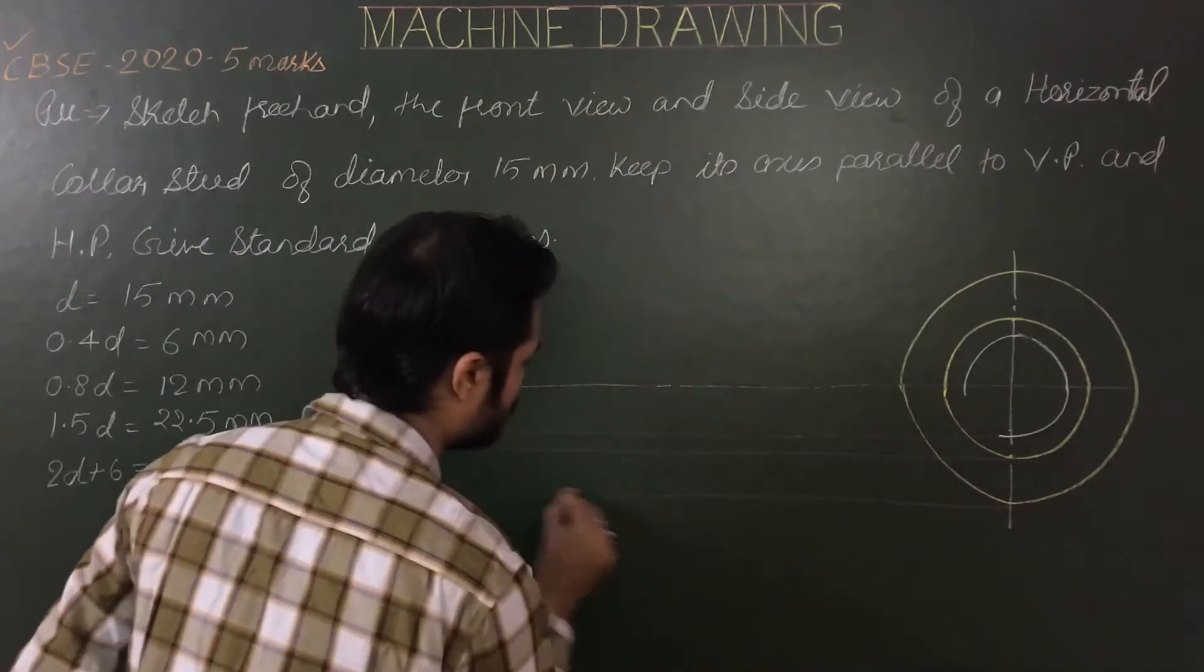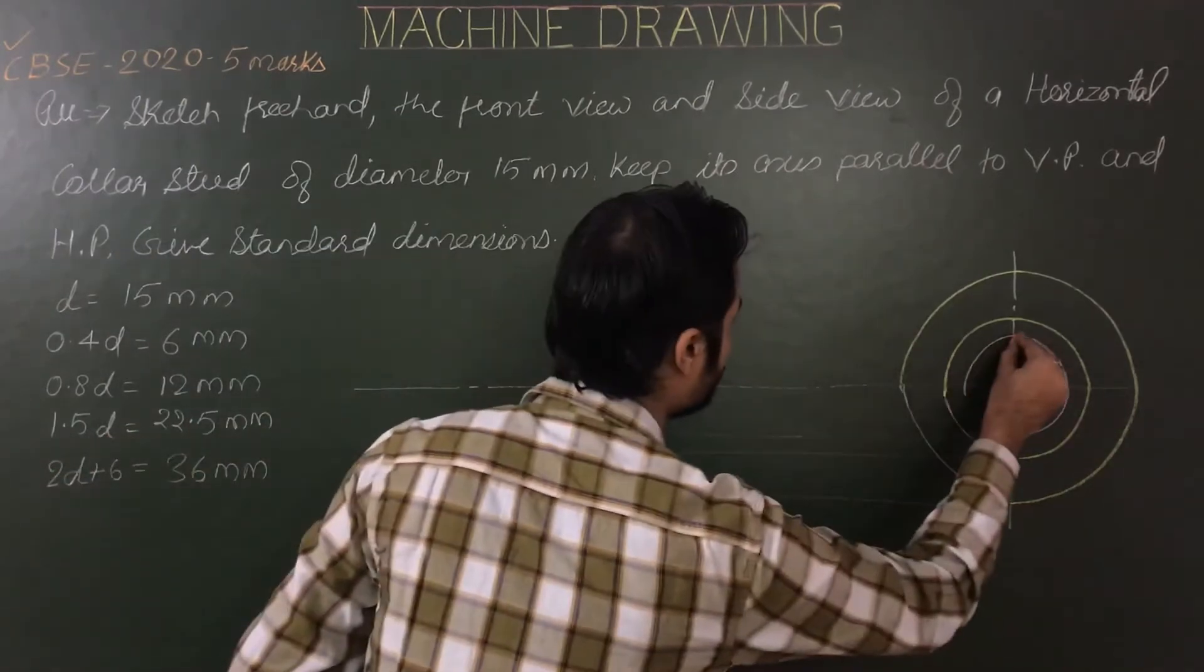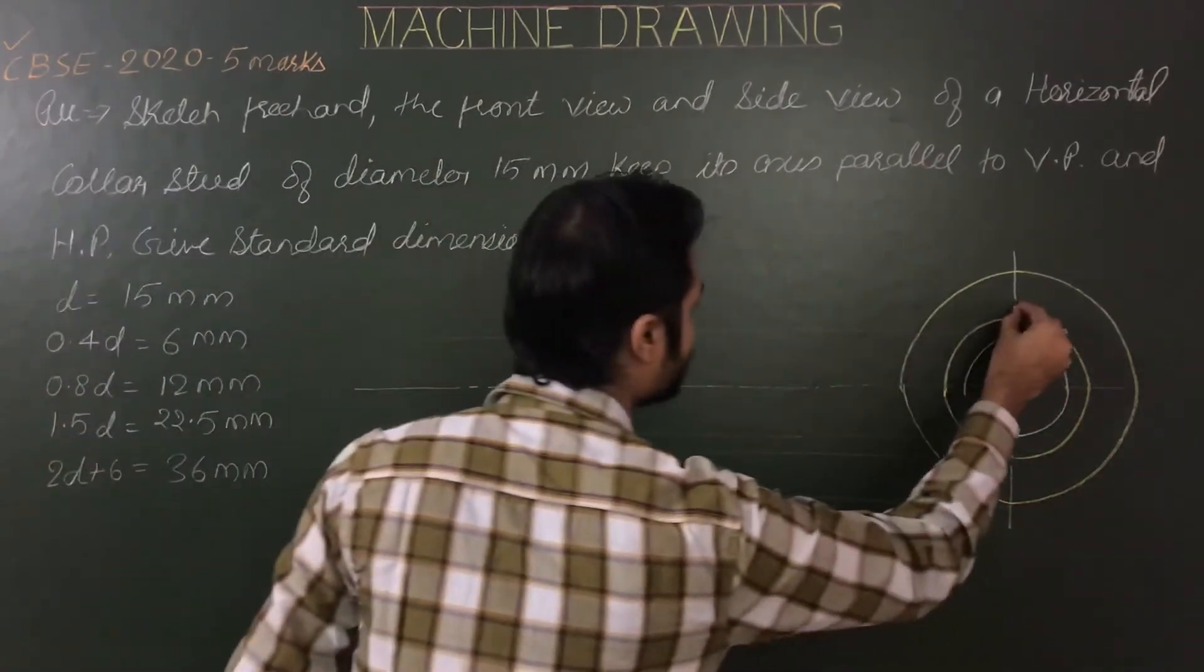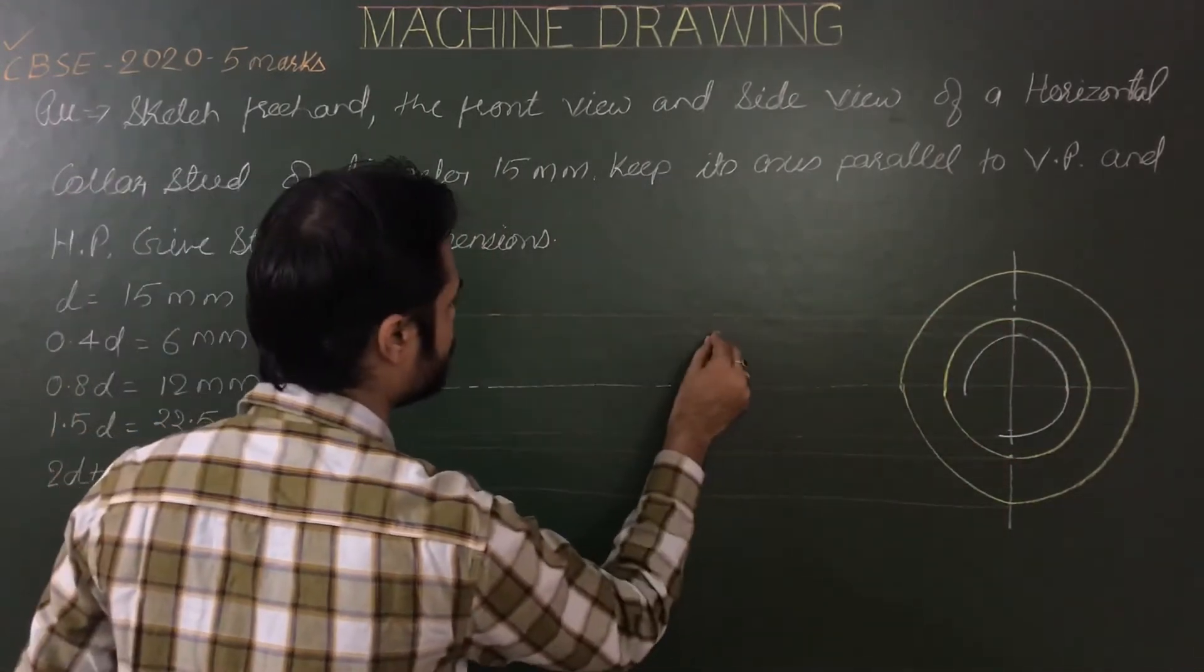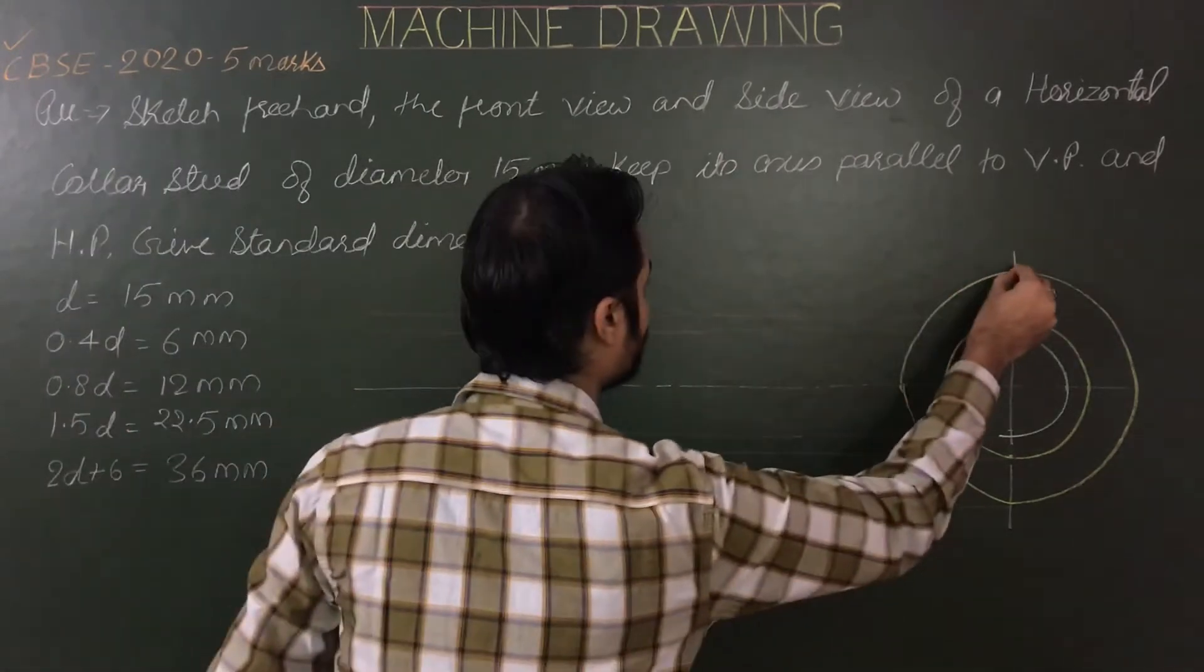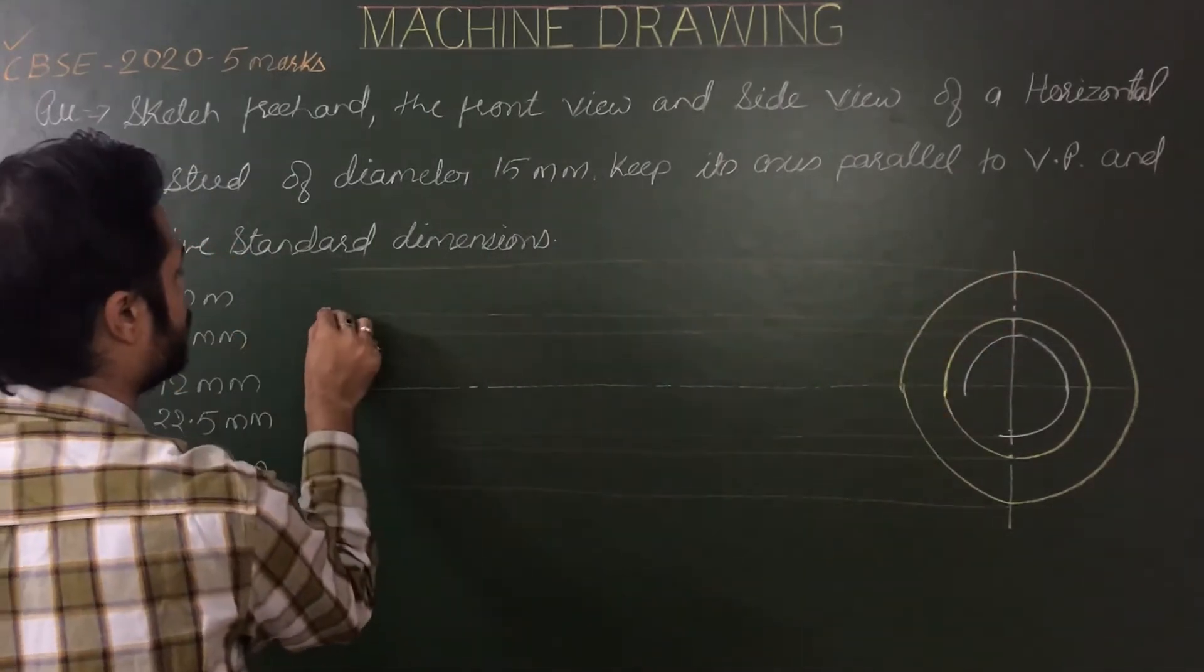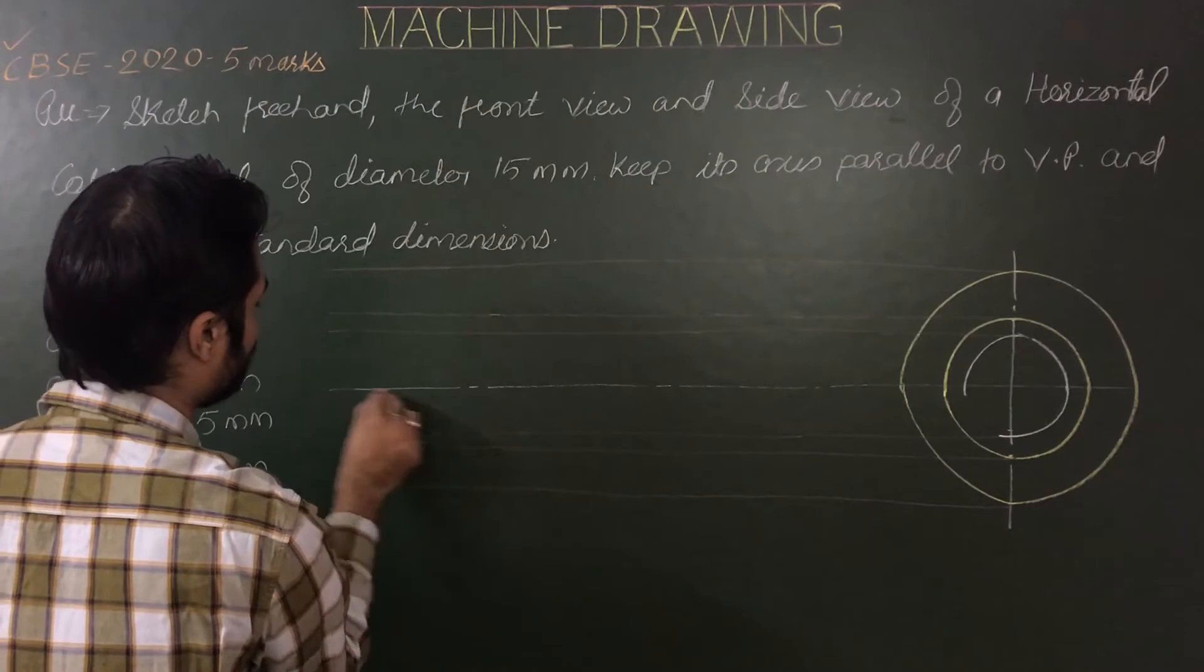Using side view, draw lines parallel to your reference or XY line like this. And then these are my limits for front view.